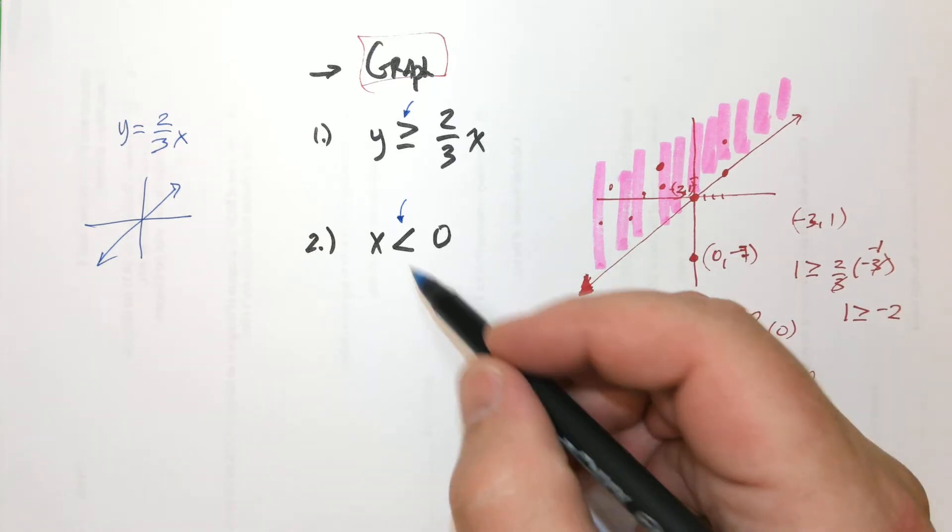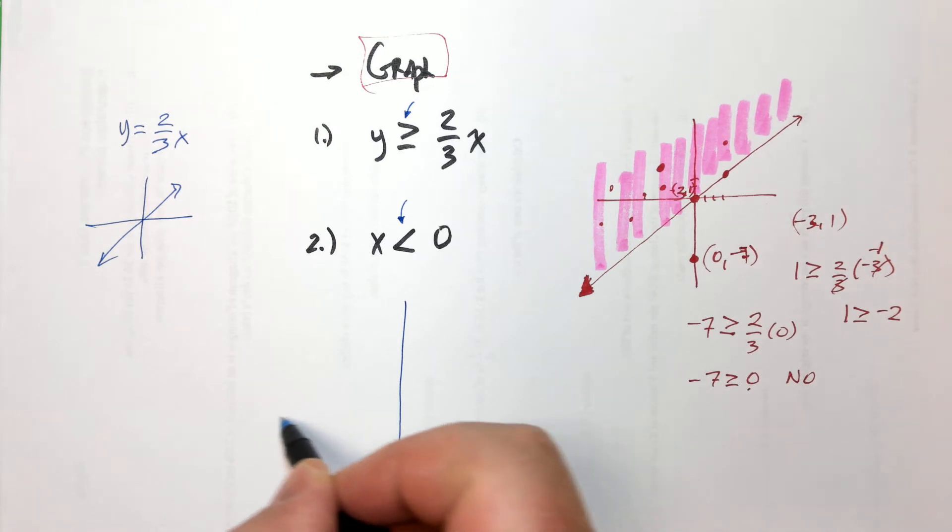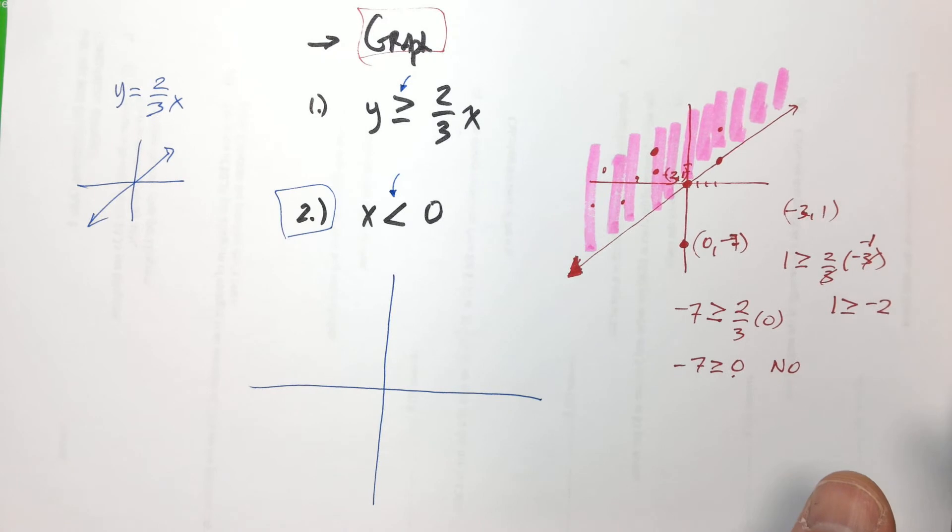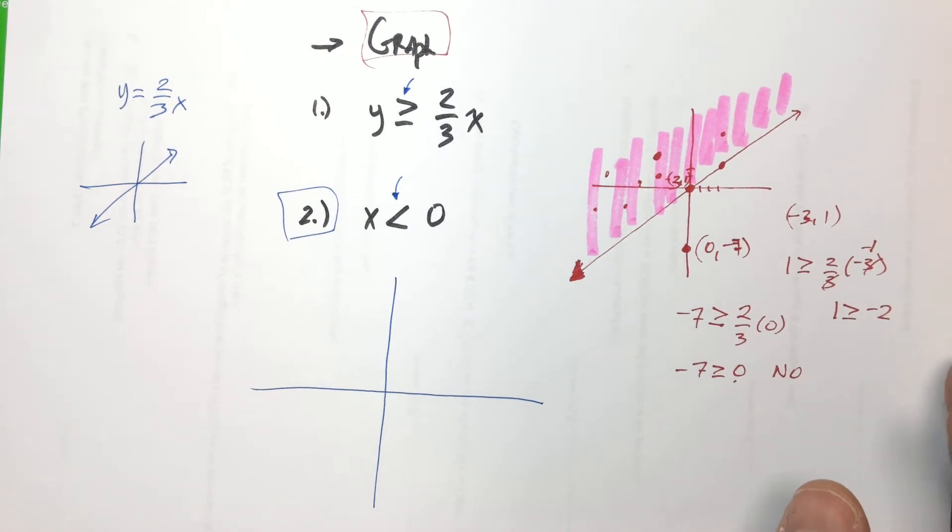And Alexa hates this one. Mr. Flowers, did you get this one? Number two? I think horizontal line on the x-axis. It's zero, so it's on the x-axis and it's down.